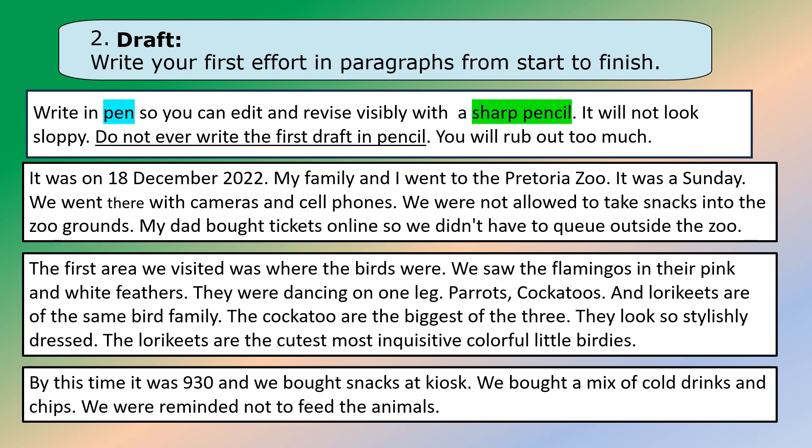It's very important to get to know the steps off by heart: first plan, second draft, third revise, fourth edit, and fifth publish. We're in step two now — write your first effort in paragraphs from start to finish. Write in pen so you can edit and revise visibly with a sharp pencil; it will not look sloppy. Do not ever write the first draft in pencil — you will rub out too much and have nothing to show for your time.